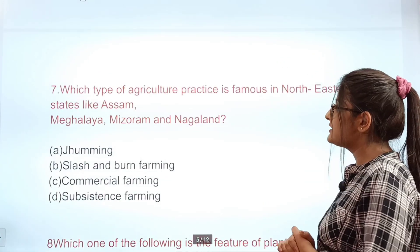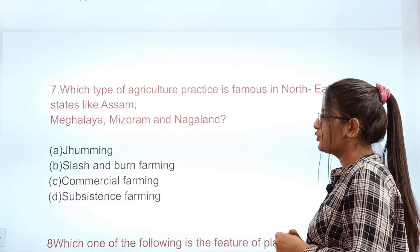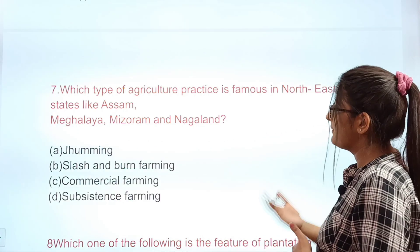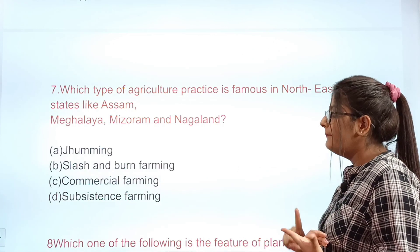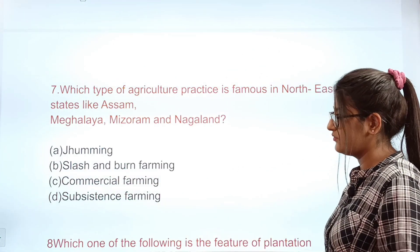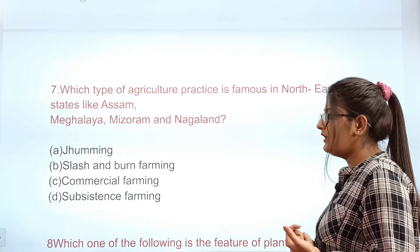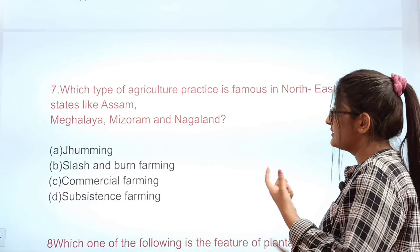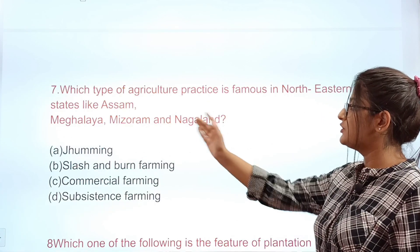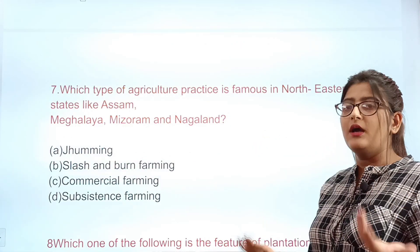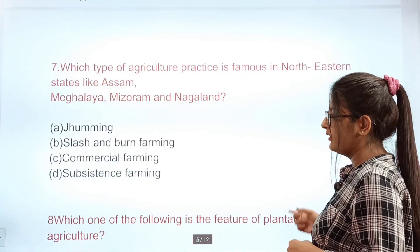Question: Which type of agriculture is practiced and famous in north-eastern states like Assam, Meghalaya, Mizoram, and Nagaland? Options: A Jhum cultivation, B slash and burn, C commercial farming, D subsistence farming. The correct answer is A — Jhum cultivation, which is the slash and burn agriculture practiced in these north-eastern states.